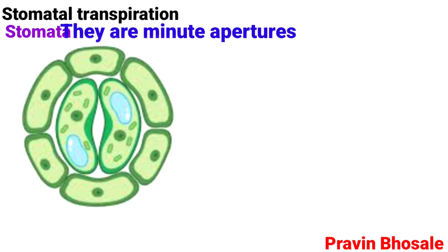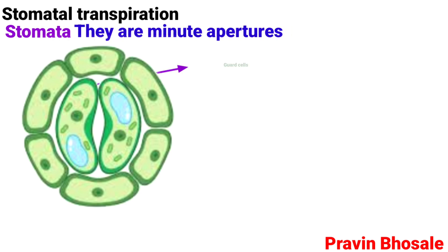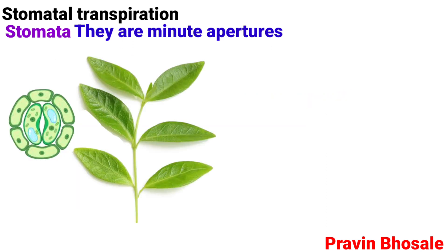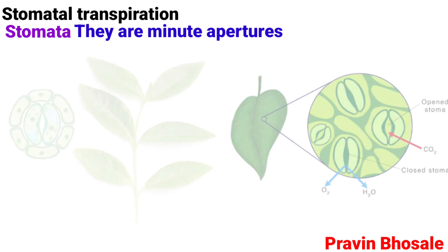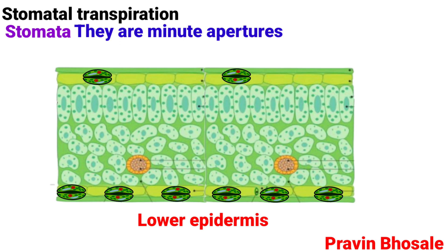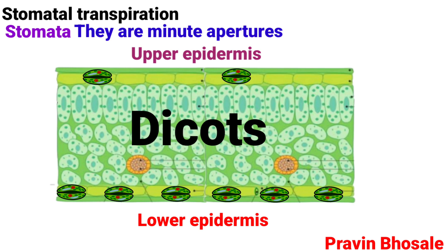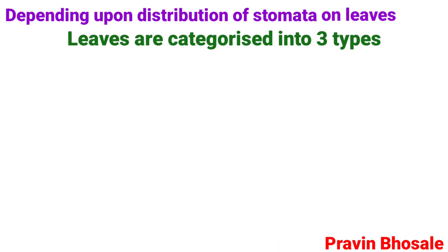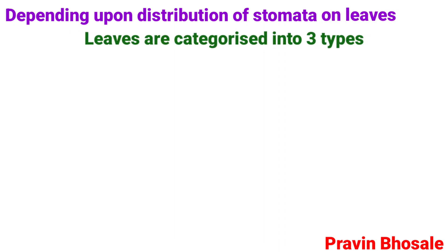Stomata are minute apertures formed of two guard cells and accessory cells. They are located in the epidermis of young stems and leaves. Leaves generally show more stomata on the lower epidermis and fewer on the upper epidermis in dicots. In monocots, there are equal numbers of stomata on both sides. Depending upon distribution of stomata on leaves, leaves are categorized into three types.